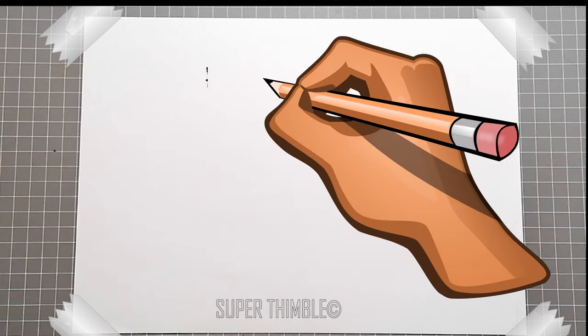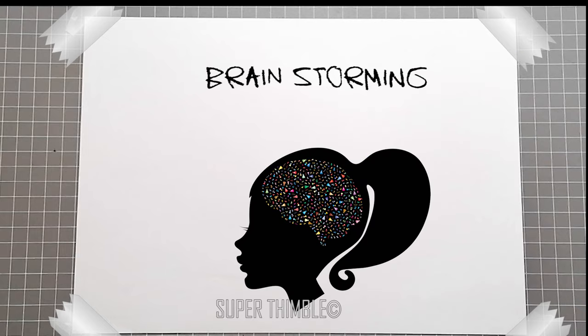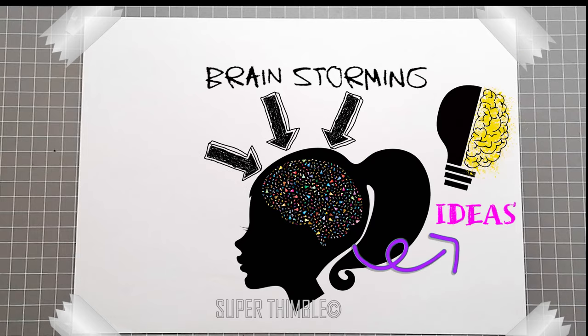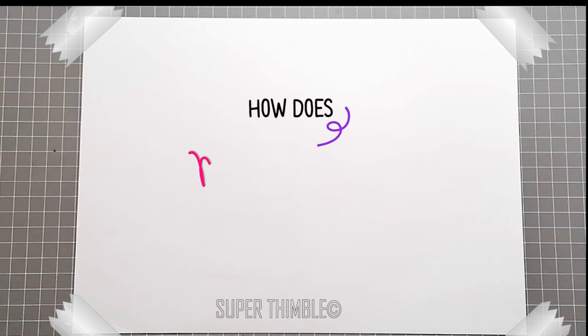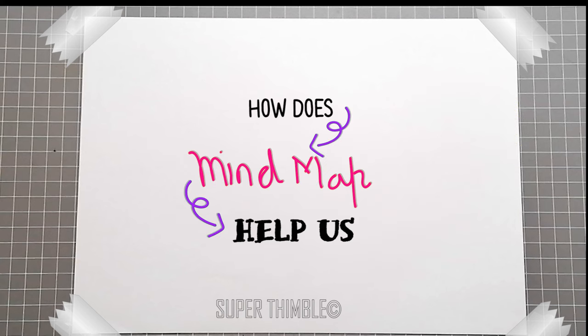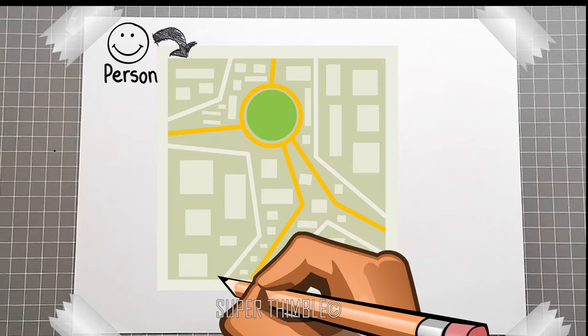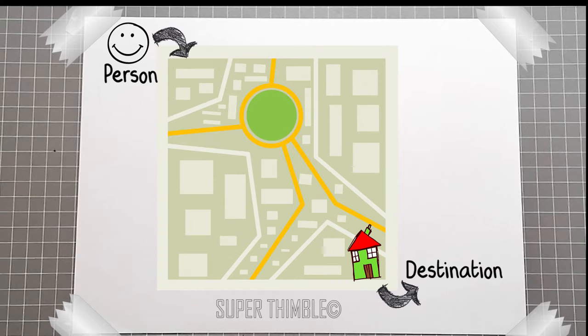It is done by brainstorming, where you put pressure on your mind to get ideas. Now how does this mind map actually help us? Let's take an example here. If a person wants to reach a particular destination which is new for him, he definitely requires a map or instructions to reach there.